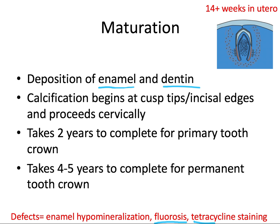Tetracycline staining is somewhat similar. Tetracycline taken as an antibiotic can also cause intrinsic staining, and it affects those same children from the second trimester or week 14 through eight years old while the teeth are forming. But what's different is that tetracycline doesn't mess up the enamel — it binds to calcium and gets incorporated into the hydroxyapatite crystals in the dentin layer. So fluorosis messes up enamel, while tetracycline stains the dentin.